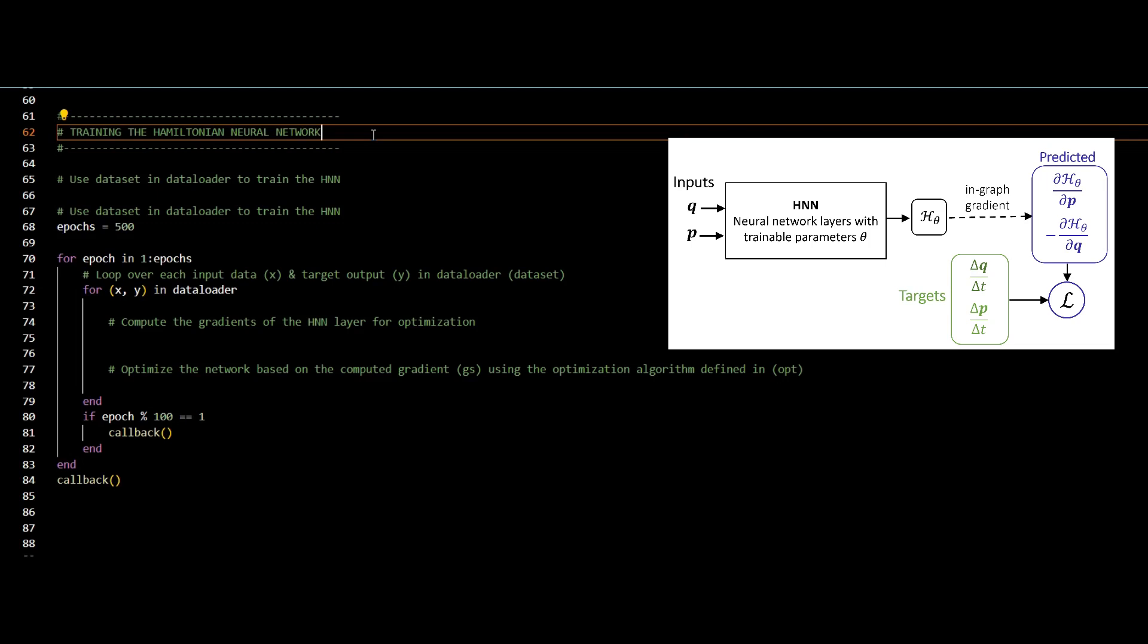The third step is training my Hamiltonian network. I will loop over each element in my data set stored in the data loader. I will then compute the gradient of the network and pass it to the loss function.